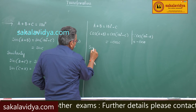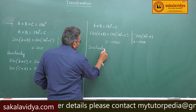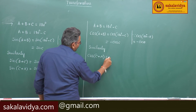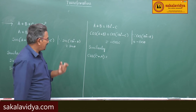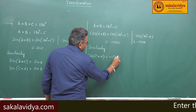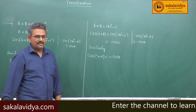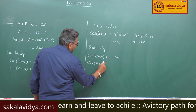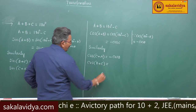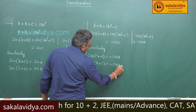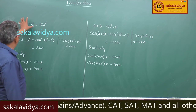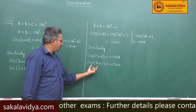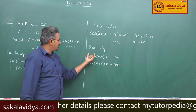Similarly, cos(c+a) equals minus cos(b), and cos(b+c) equals minus cos(a). So if a+b+c = 180 degrees: cos(a+b) = minus cos(c), cos(b+c) = minus cos(a), and cos(c+a) = minus cos(b).